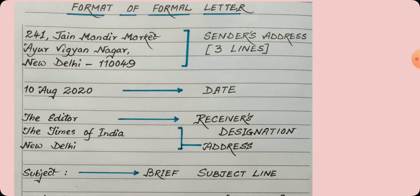Again, leaving a gap of one line, we are going to write the receiver's designation. Since this is the format of an editorial letter, the designation of the receiver is the editor. Note that I have not written 'To the editor' — just 'the editor'. Then, the Times of India, New Delhi.